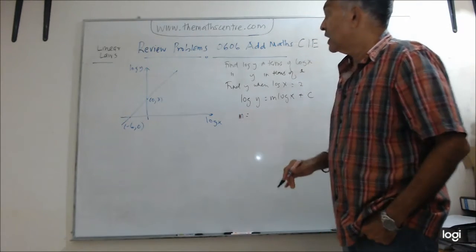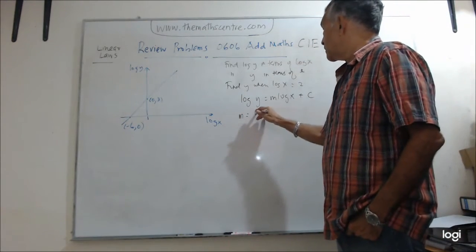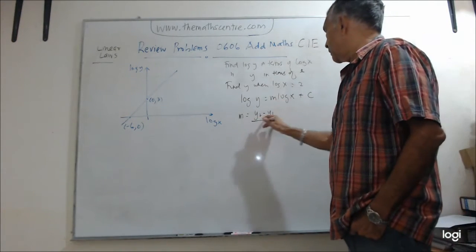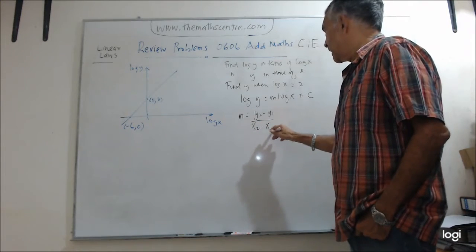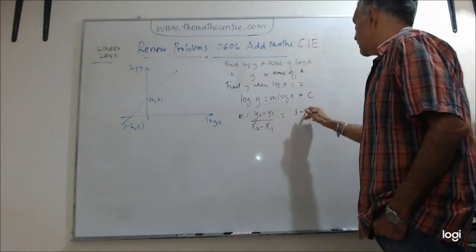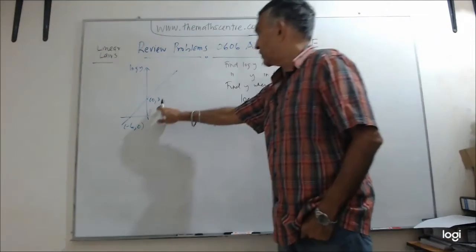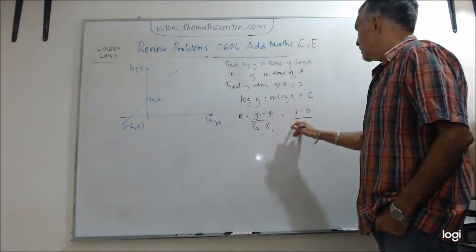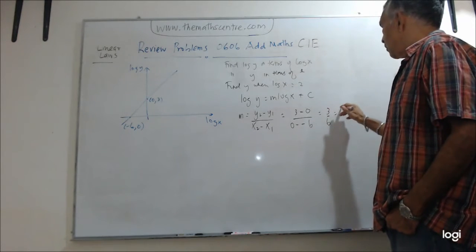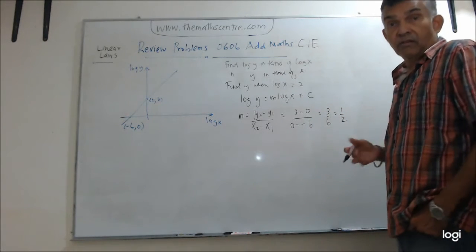m will be what? Let me use the formula for you, y2 minus y1. We can do it much faster, but let's just do it using a formula, y2 minus y1 over x2 minus x1. Right? So I have got 3 minus 0. Okay, I have 3 minus 0 over 0 minus minus 6. I'll have 3 over 6, which is 1 over 2. Done.